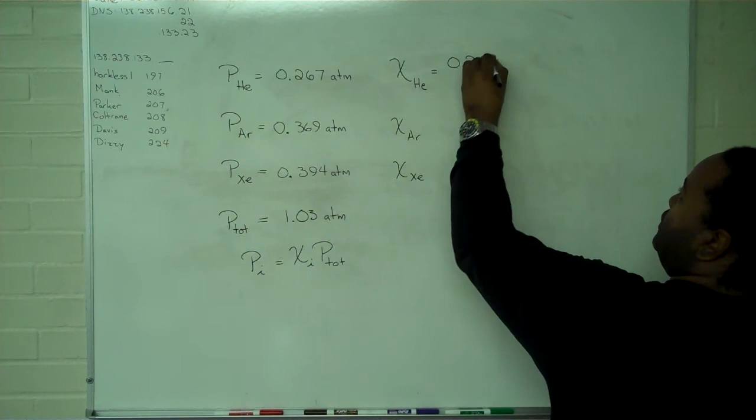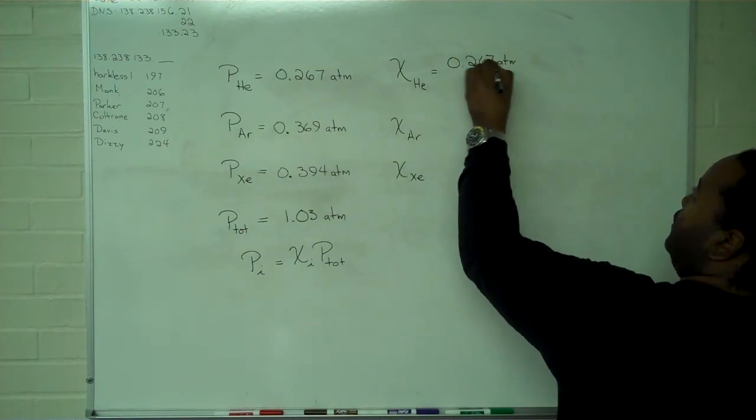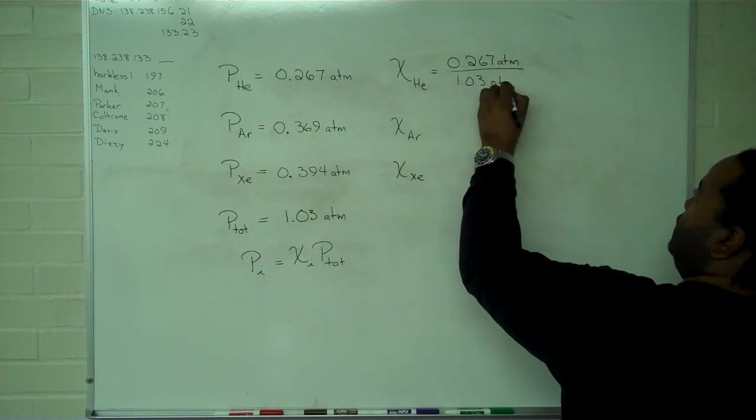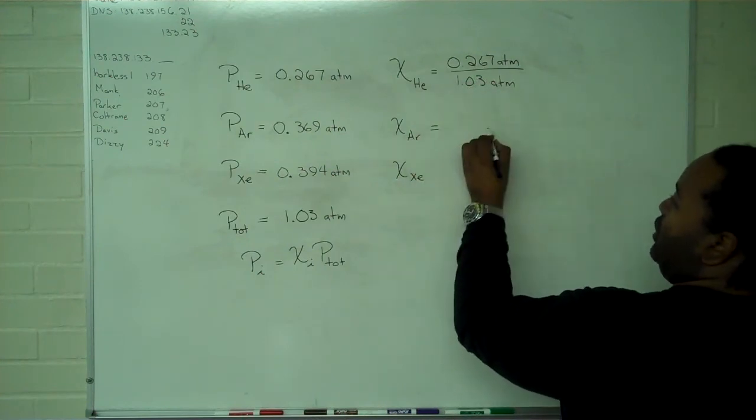we're going to have 0.267 atmospheres divided by the total of 1.03 atmospheres. For argon,